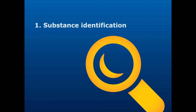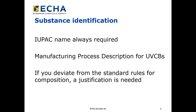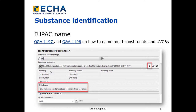Inside substance identification, the challenges in creating dossiers are mostly related to the IUPAC name, manufacturing process description for UVCB substances, and the justification when deviating from the standard rules for composition. First we look into the IUPAC name of the substance. IUPAC name is a requirement for every registration. In case the IUPAC nomenclature cannot be applied to your substance, as is often the case with UVCB substances, a chemical name or the name that defines the chemical nature of your substance should be provided in the IUPAC name field.